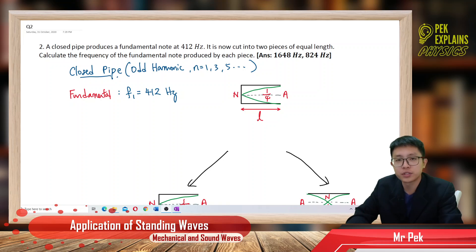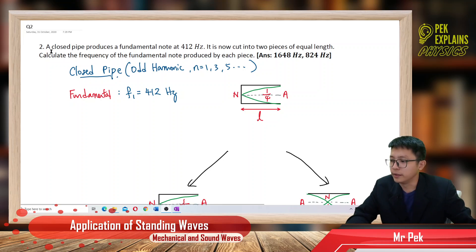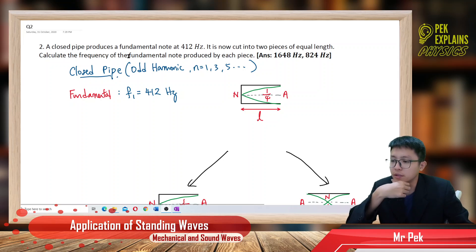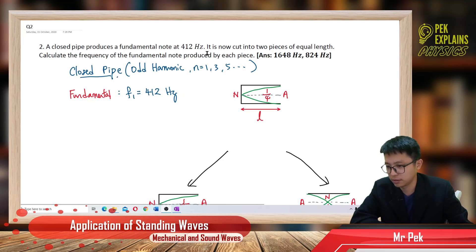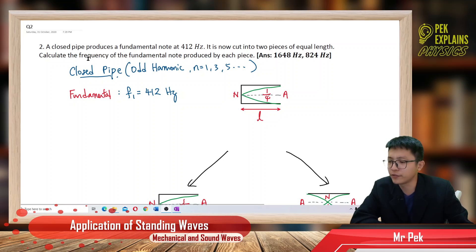Let us proceed to the second question. A closed pipe produces a fundamental mode at 412 Hz. It is now cut into two pieces of equal length. Calculate the frequency of the fundamental mode produced by each piece.